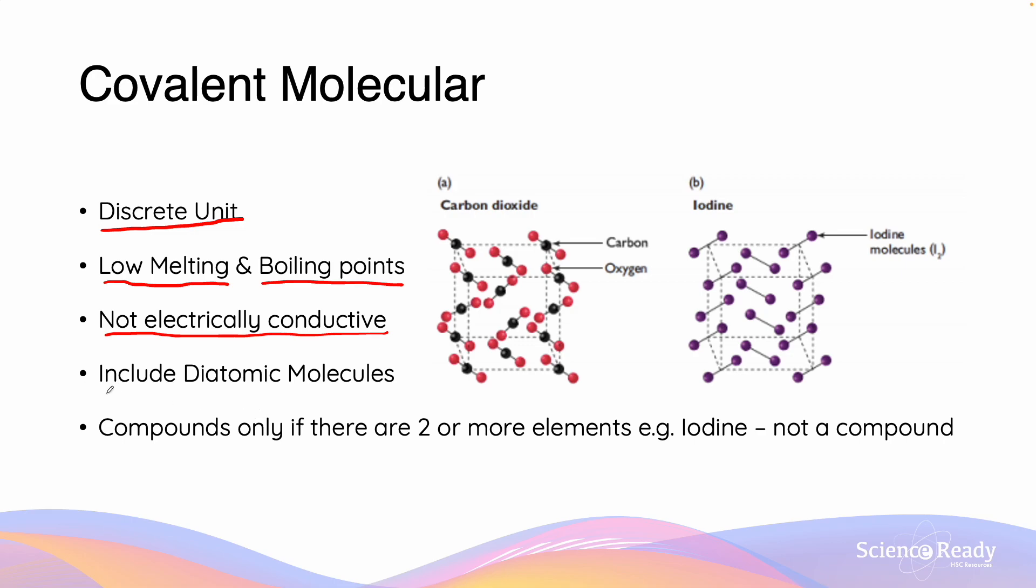Covalent molecular substances are also not limited only to compounds but can also include diatomic molecules such as oxygen, such as iodine. So be wary that substances can be covalent molecular without being compounds. This is because compounds must contain two or more elements.